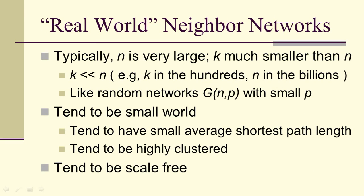Remember, typically N is very large, K is much smaller than N. This means that a nearest neighbor graph is like a random network with small p. Except that they tend to be small world, tend to have small average shortest path lengths, tend to be highly clustered, and tend to be scale free.